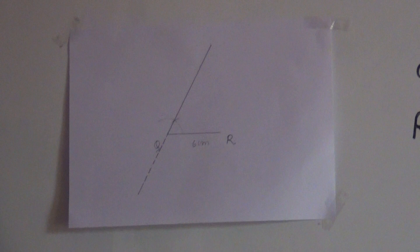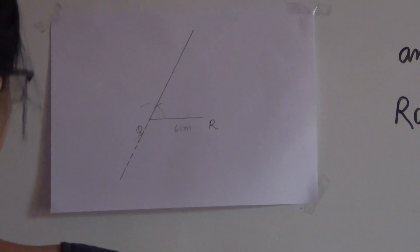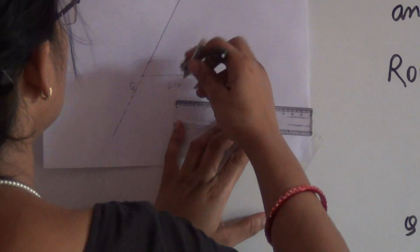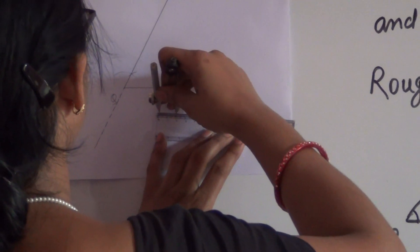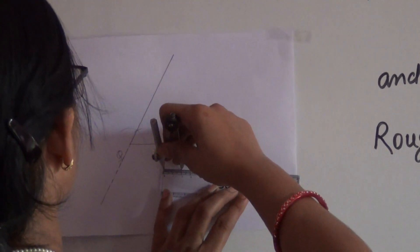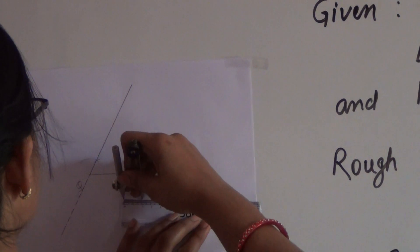So the difference is 2 centimeters. We will measure 2 centimeters on the ruler using our compass, and then the same steps which we have followed earlier will be repeated. This is 2 centimeters.